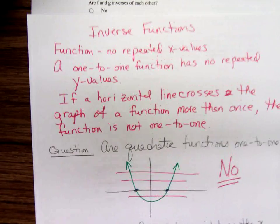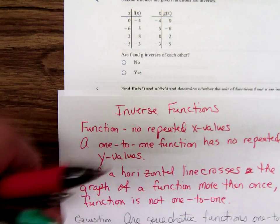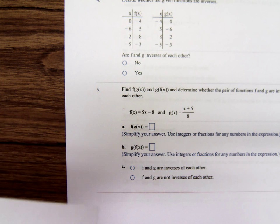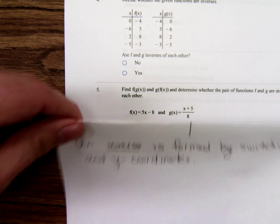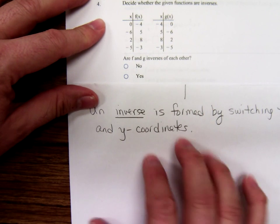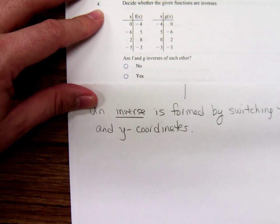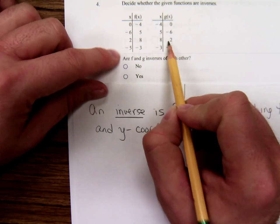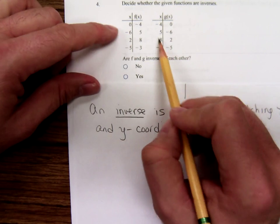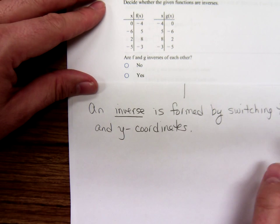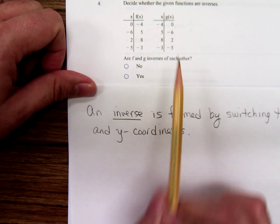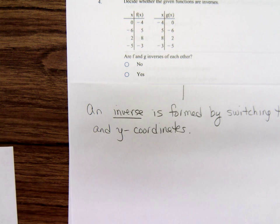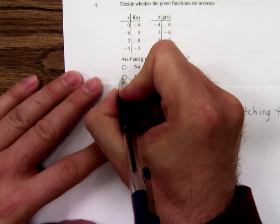If we look at problem number four, it's asking: are f and g inverses of each other? Well, an inverse switches the x and y. So you look through and see: are they just switching the x and y? And on this one, yes. Just because my answer here is yes doesn't mean yours will be — they change up the numbers. An inverse function should just be switching the x and y's. So the answer to four here is yes, these are inverses.